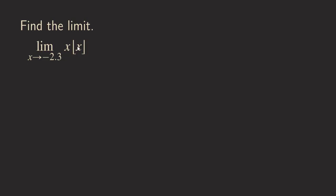Next problem. This time we are going to find the limit of the same function but let x approach a non-integer — negative 2.3. There's nothing special about this number; you can pick others. We use the same idea. Taking the limit of the floor function as x approaches negative 2.3 from the left: since x will be less than negative 2.3, the greatest integer less than that is negative 3. And the limit of x itself is just negative 2.3.